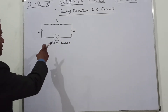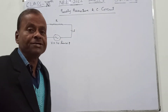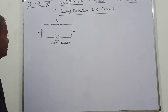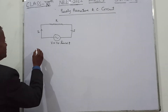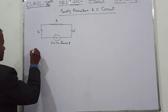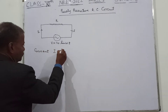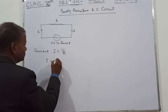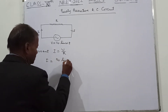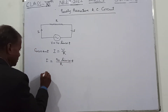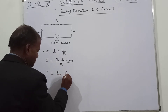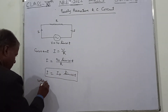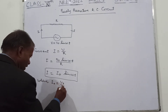The symbol shown is for AC because AC is variable in direction and magnitude, as seen in the waveform. For a purely resistive circuit, the current I is equal to V upon R. So I equals V naught sine omega T upon R, or I equals I naught sine omega T, where I naught equals V naught upon R — the peak value.